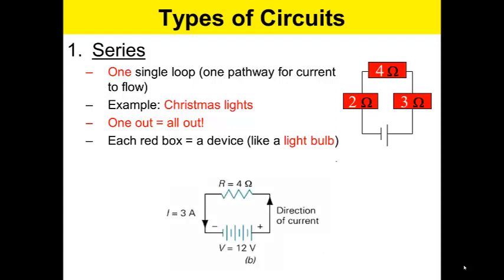Each red box is a device like a light bulb. There's only one direction of current. Those are resistors, so they're lights. That's anything that takes up electricity and impedes the flow of electricity. There's your power source, which is the battery.